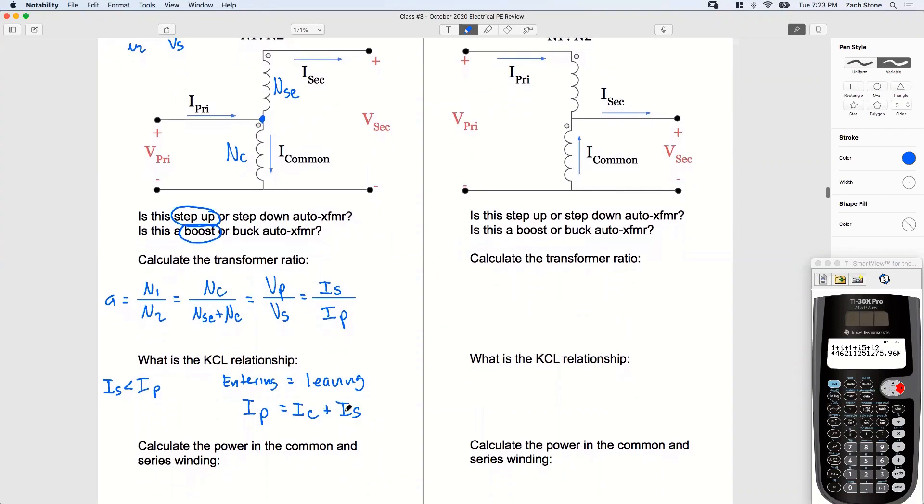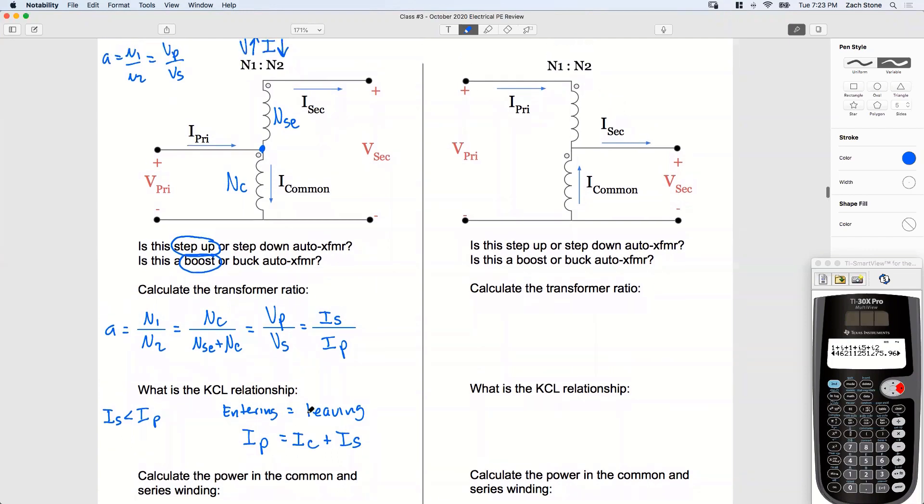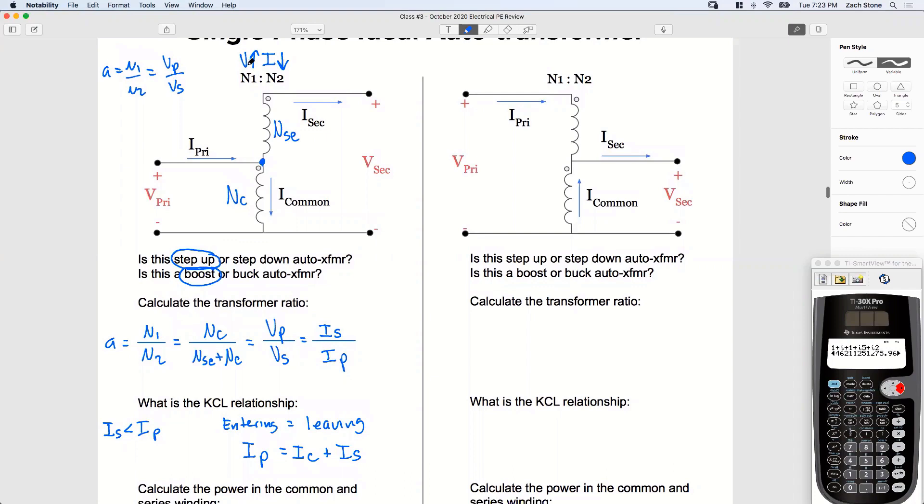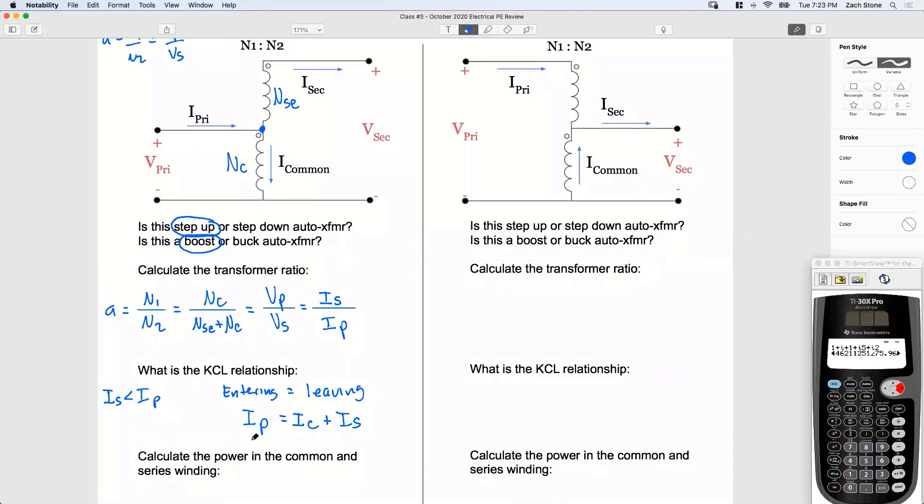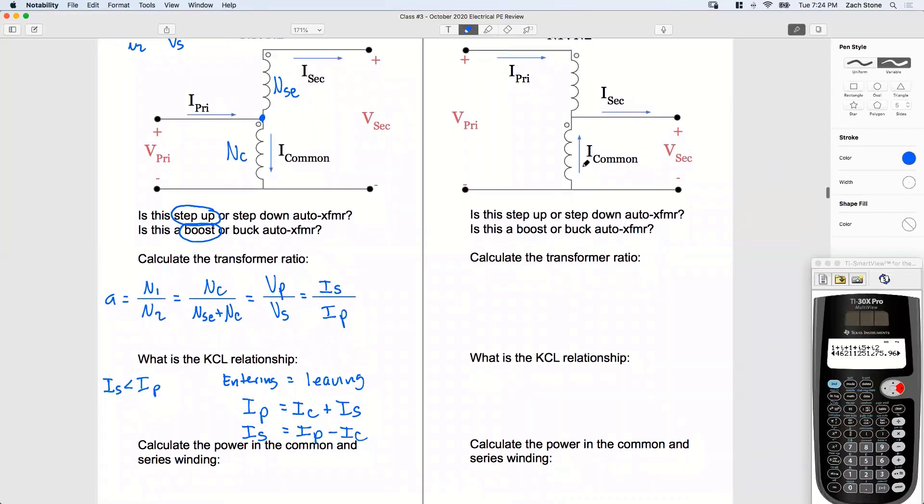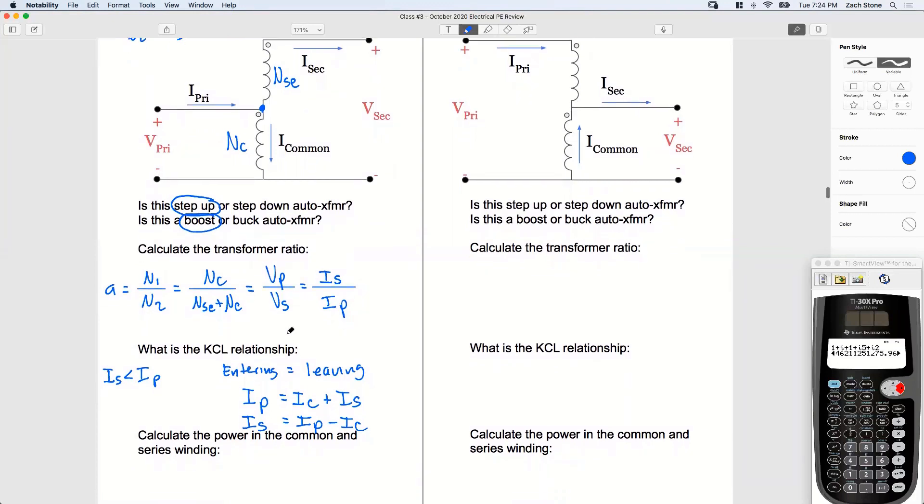If we rearrange this to solve for I secondary, notice how I secondary will be IP minus IC. In other words, this is a voltage step-up transformer, which means the current is stepping down. I secondary is smaller than the primary current by a difference of the common current. See that? In other words, if I rewrite this for I secondary, it's going to be I secondary equals IP minus IC. That's how you remember what direction is the common current flowing in. Don't worry if that's a little fuzzy right now, you'll get extra practice on this side.